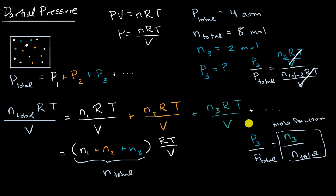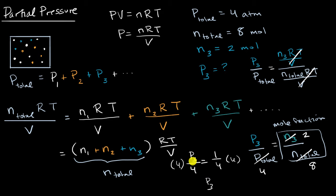For this example, substituting the numbers: the total pressure is four atmospheres, the total number of moles is eight, and the number of moles of gas three is two. So the partial pressure due to gas three over four equals two over eight, which equals one fourth. Multiplying both sides by four, the partial pressure due to gas three is one atmosphere.